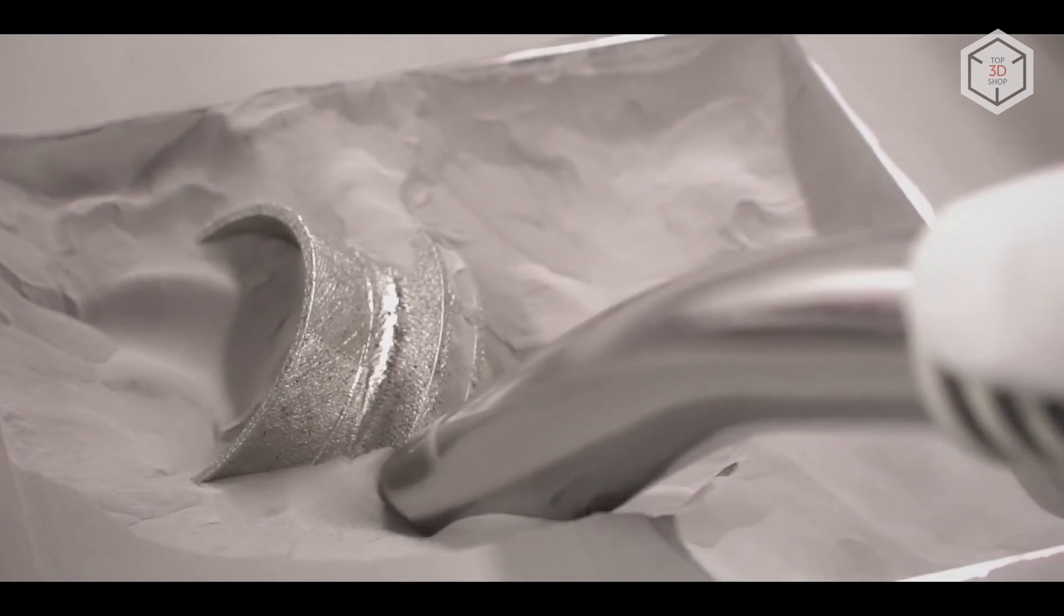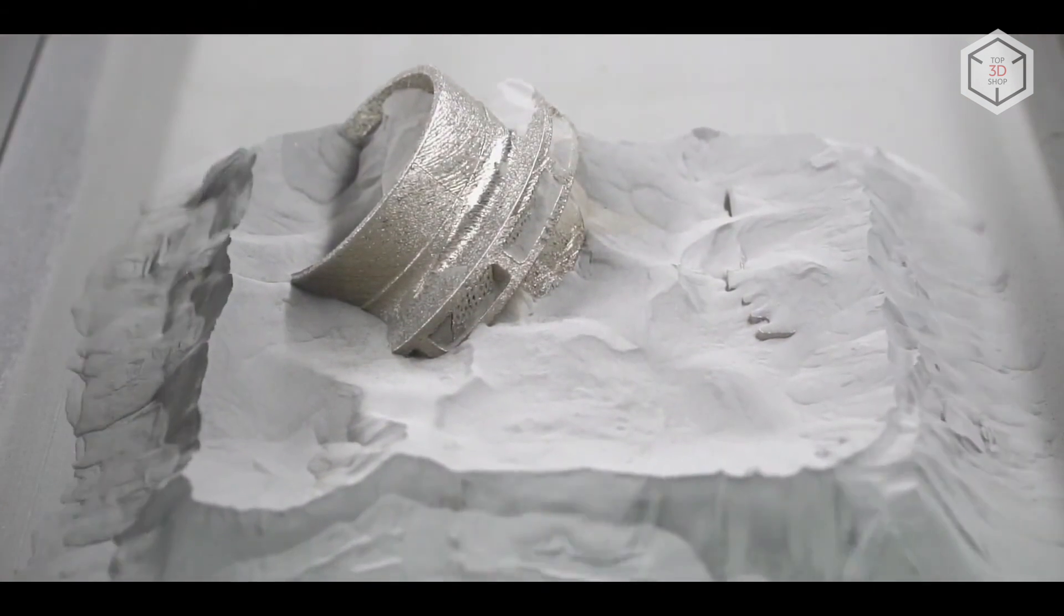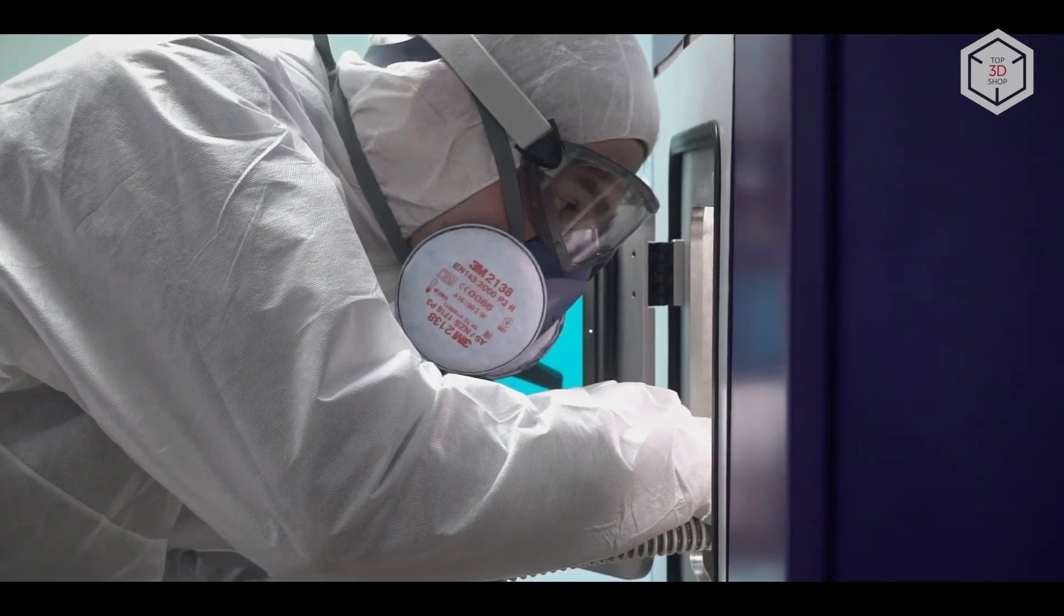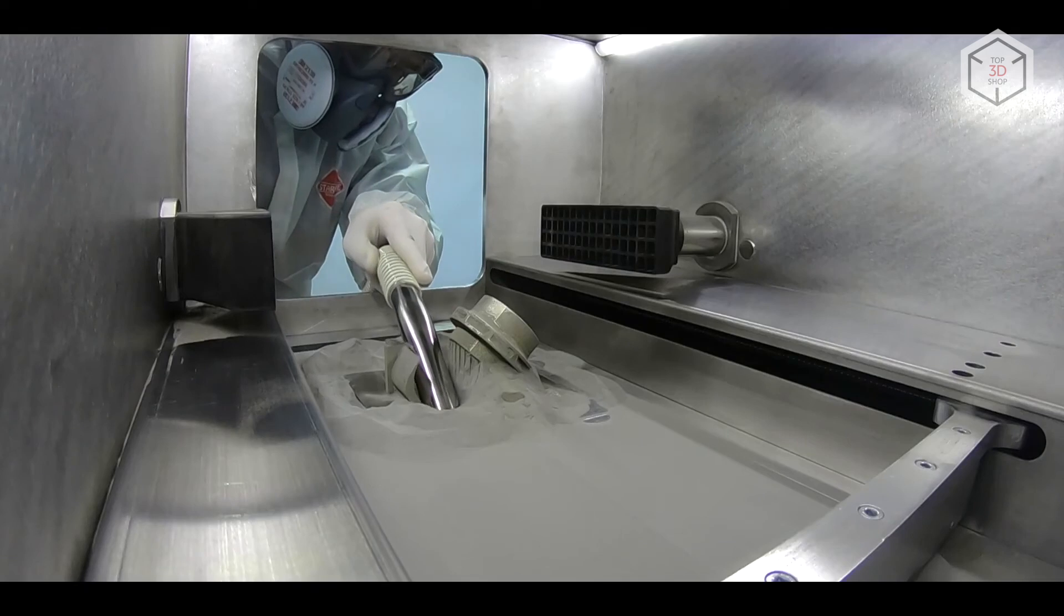Today, SLM 3D printers use both pure metal powders and metal alloy ones. The most common consumables are aluminum, cobalt chrome, copper, nickel, inconel, stainless and tool steel, titanium, and precious metals.